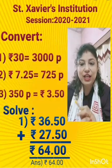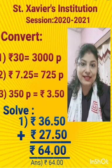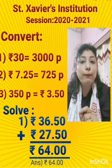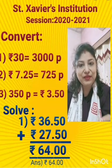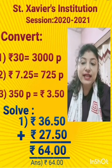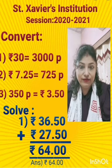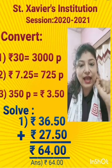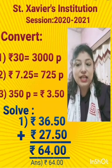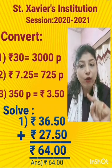Question number 1: Convert rupees into paise. As you know, whenever you are converting rupees into paise, you are multiplying the given number by 100, because rupee 1 is equal to 100 paise. So here, rupees 30 is equal to 30 into 100, which is equal to 3000 paise. Now, rupees 7.25 — just erase that point, and you will get 725 paise, because we remove the point before 2 digits.